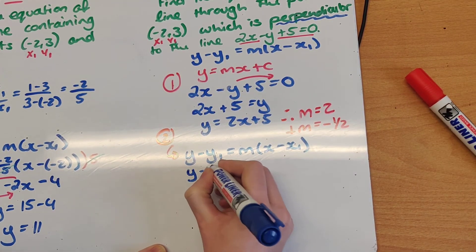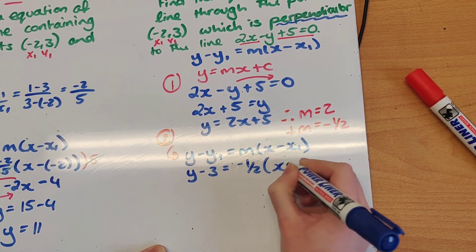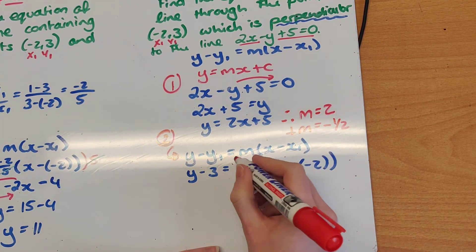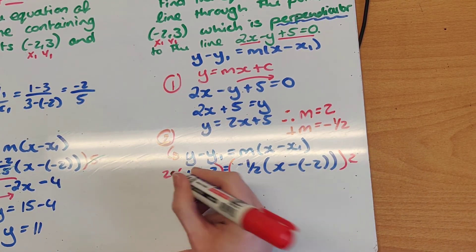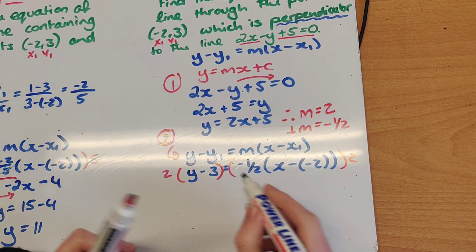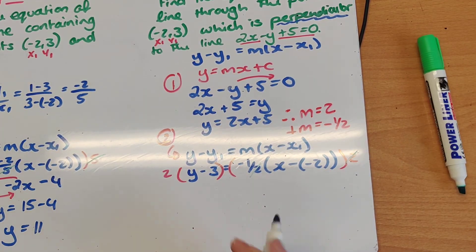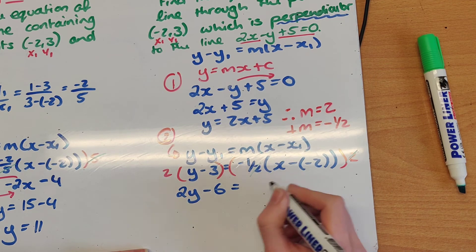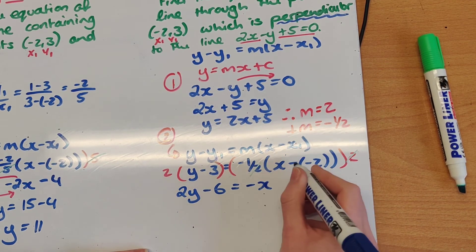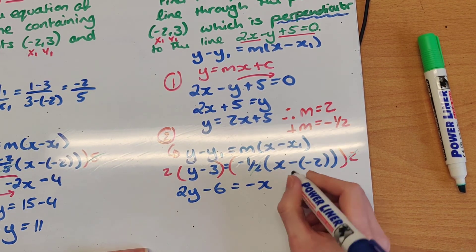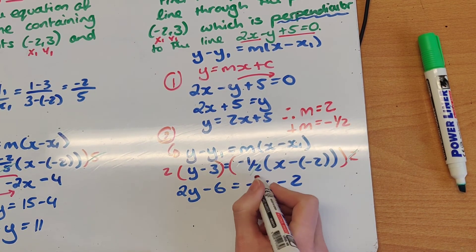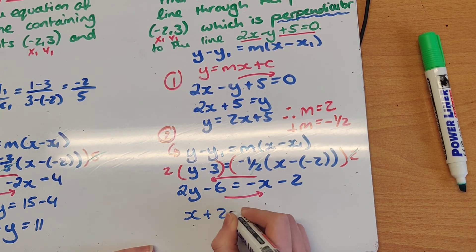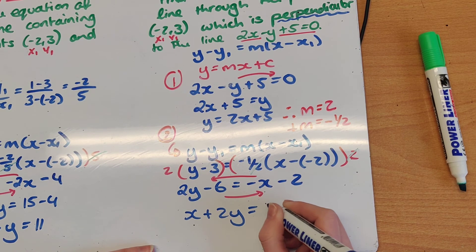So I have y minus 3 equals minus 1 half by x minus minus 2. To get rid of the fraction, I multiply both sides by 2. They cancel on the right-hand side, leaving minus 1 as the multiplier: 2y minus 6 equals minus x, and minus 1 by plus 2 — because minus by minus gives plus — gives minus 2. Bringing letters to one side and numbers to the other: x plus 2y equals minus 2 plus 6, which is 4.